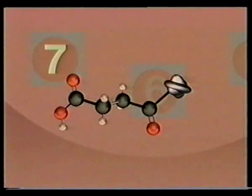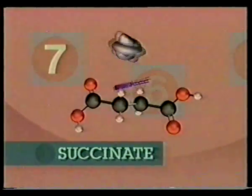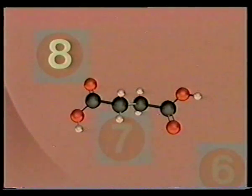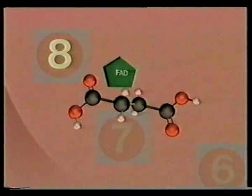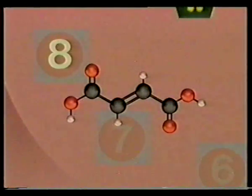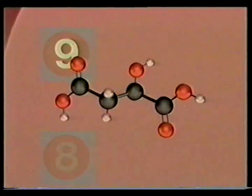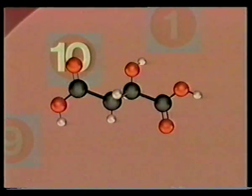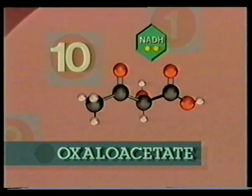Succinyl-CoA reacts with an ADP and a phosphate, releasing coenzyme A, ATP, and forming succinate. Succinate encounters a molecule of FAD, and this reaction produces a newcomer — the energy carrier FADH2 — and fumarate. Fumarate in turn reacts with water, and the product is malate. In the final reaction, malate encounters an NAD+, and produces the last of the NADH energy carriers and regenerates oxaloacetate.